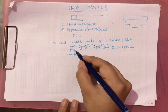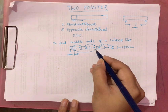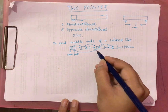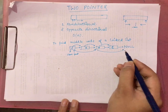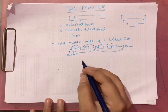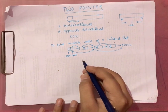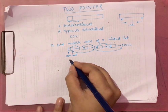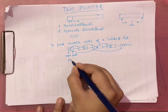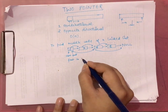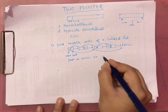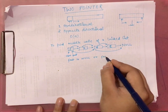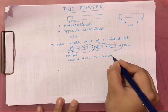The fast pointer moves two nodes at a time. The terminating condition is when either fast is null or fast.next is null.